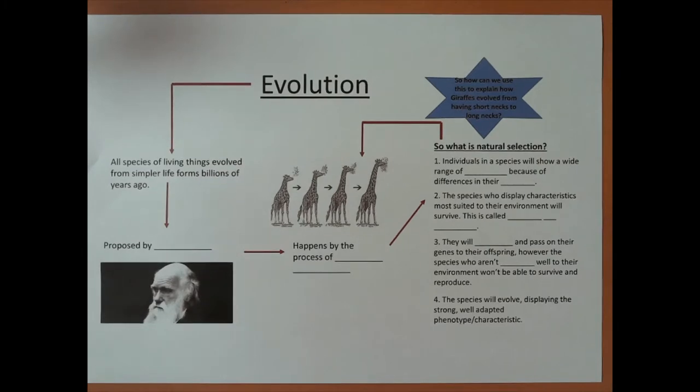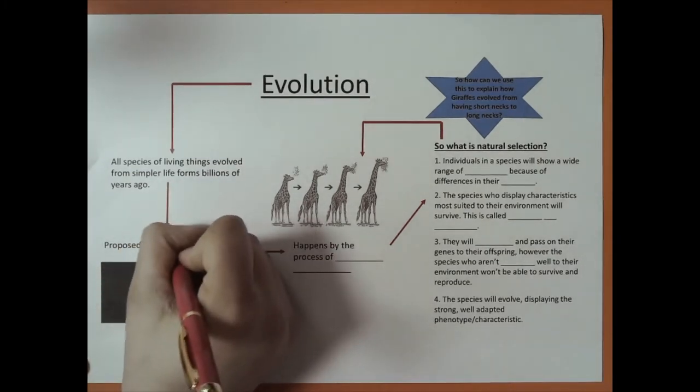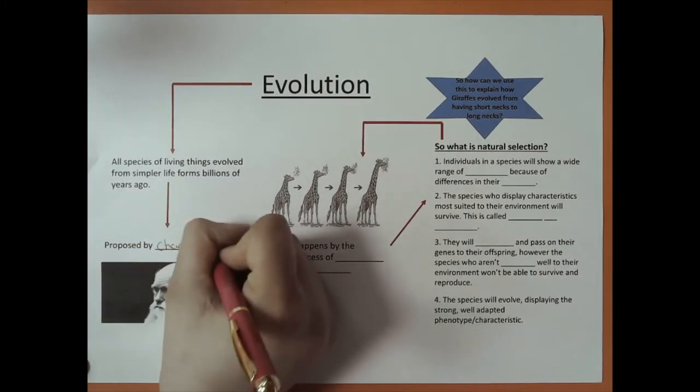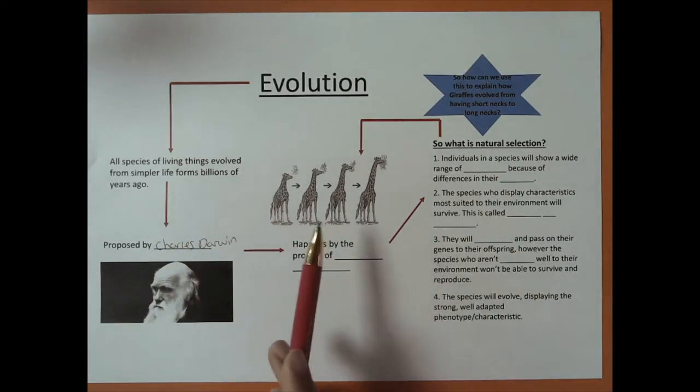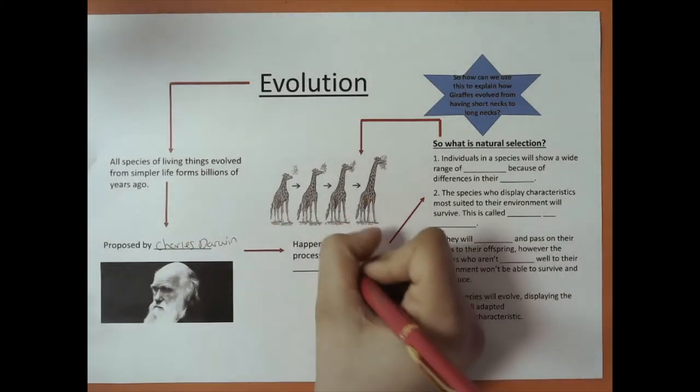It was proposed by Charles Darwin. He basically stated that evolution happens by the process of natural selection.